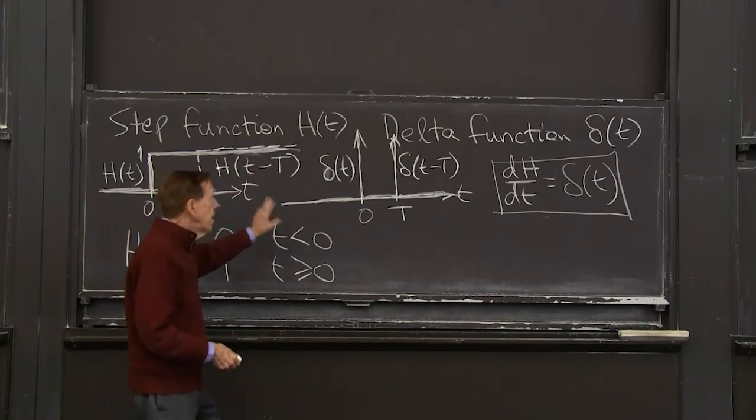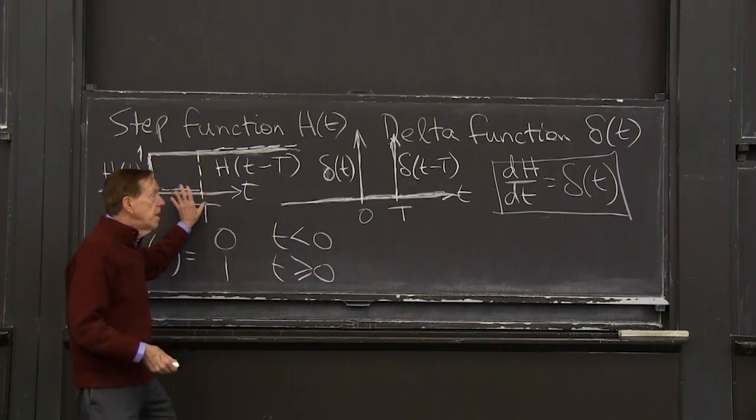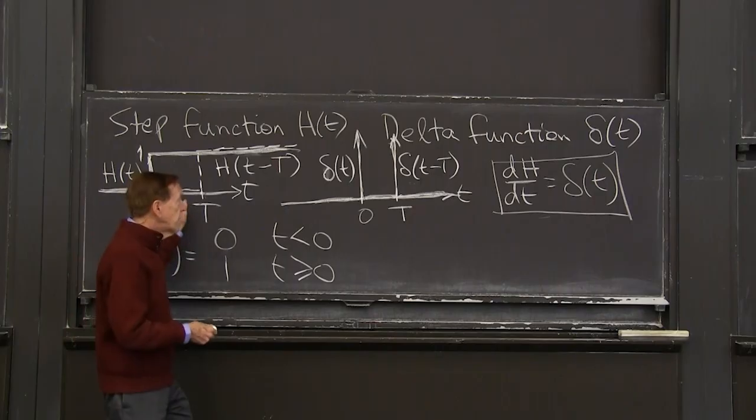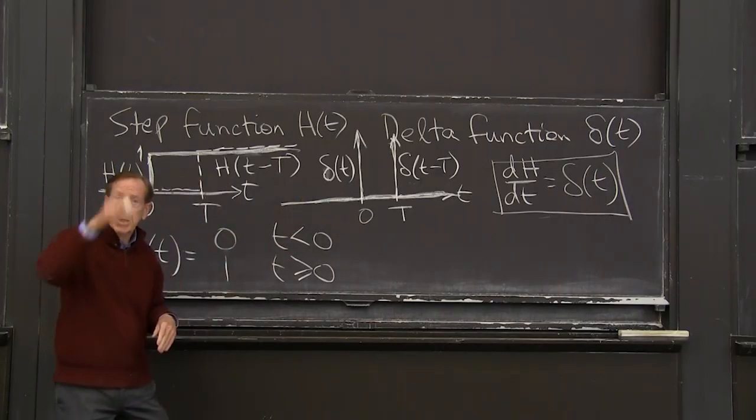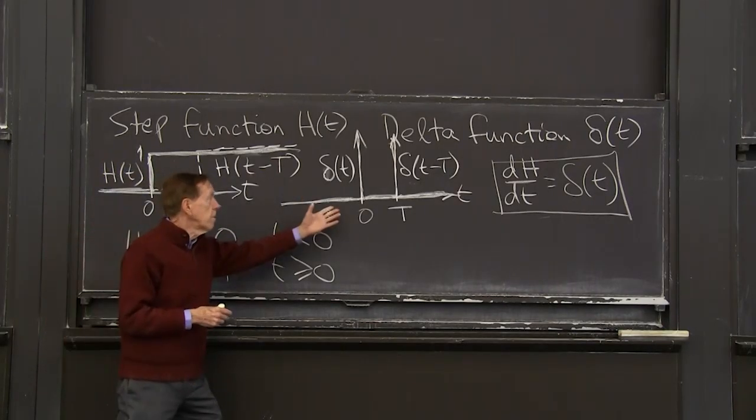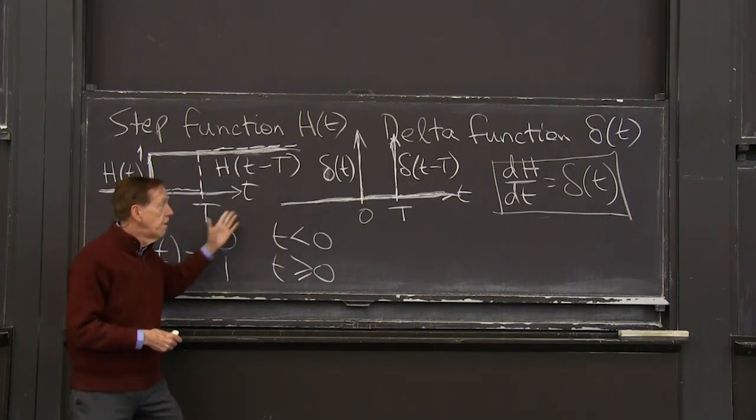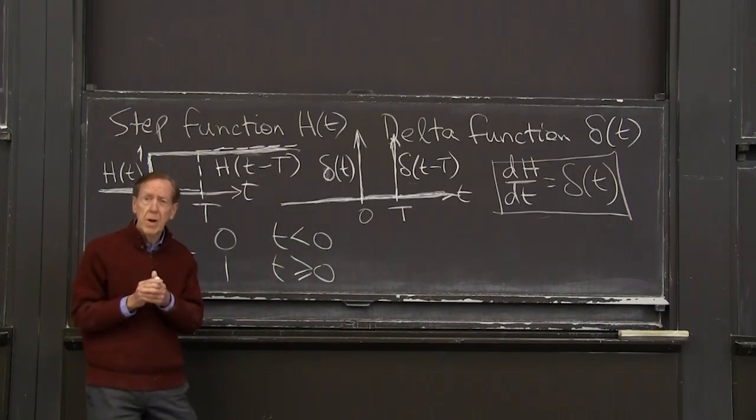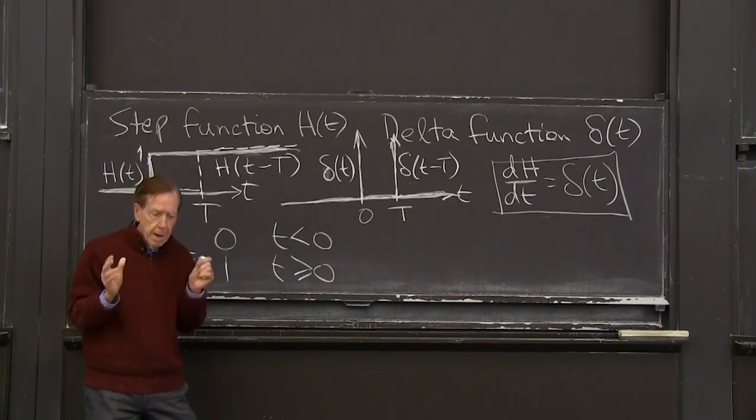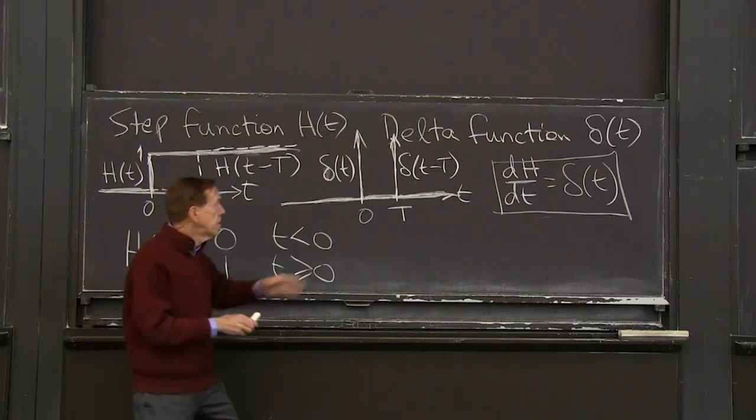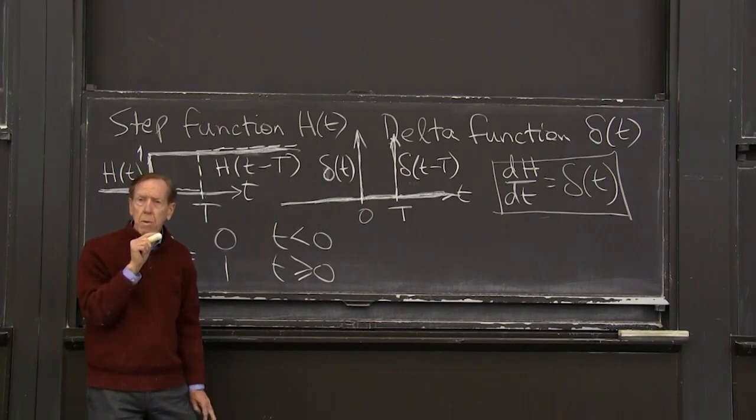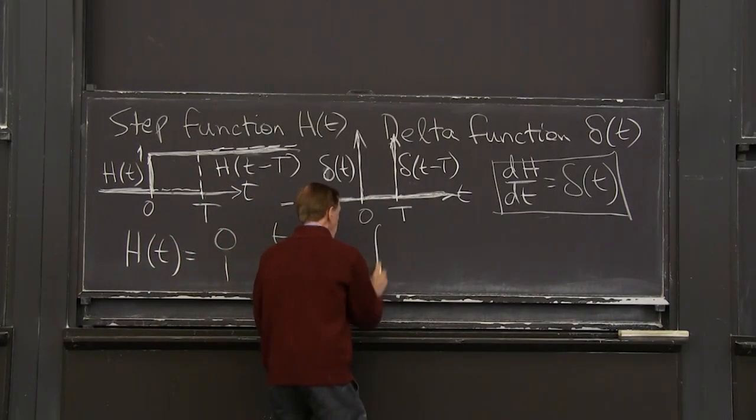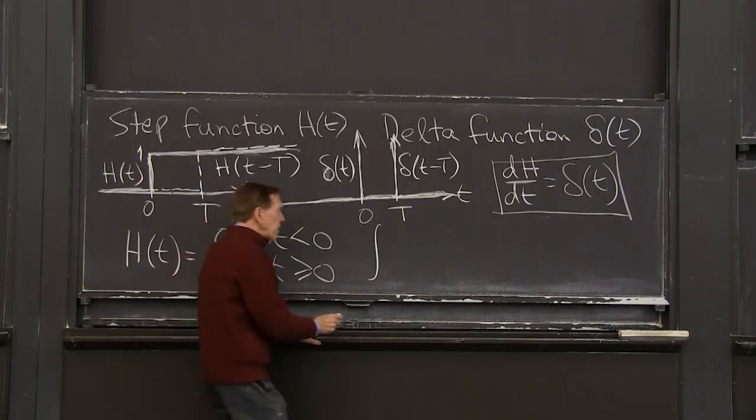The delta function is the, sorry, the step function is the integral of the delta function, right? We're going in the opposite direction. If we take derivatives, we get craziness. If we take integrals to go from delta, so the integral of the delta is the step function. And that's really how you know a delta function. That's the math way to describe more exactly than this arrow that just fires off, what the delta function's doing.